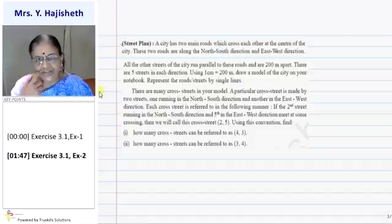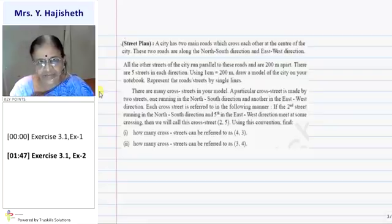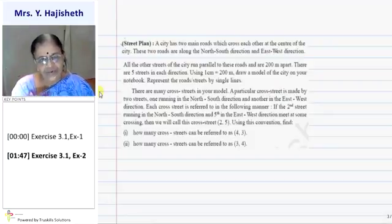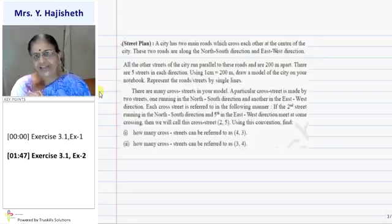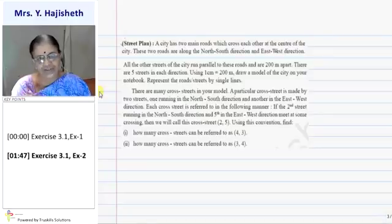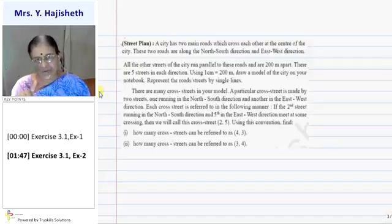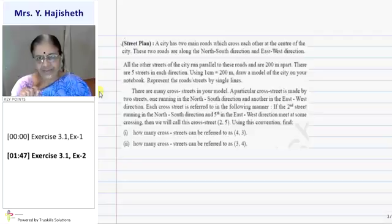There are many cross streets in your model. A particular cross street is made by two streets. One running in north-south direction and another in east-west direction. Each cross street is referred to in the following manners. If the second street running in the north-south direction and fifth in the east-west direction meet at some point, then what we call the coordinates of that cross street is 2-5 because it is at a distance 2 from origin. Right? In a direction of east. And from east, it is 5 meter in north.